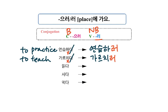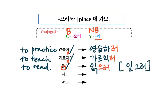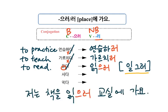학생들 means 'students.' 읽다 means 'to read' — there is 받침 before 다. Take out 다 and add 으러. If you do 읽으러, you carry over this sound. 읽으러. 저는 책을 읽으러 교실에 가요. 왜 교실에 가요? 책을 읽으러 — in order to read a book. I go to the classroom to read a book.